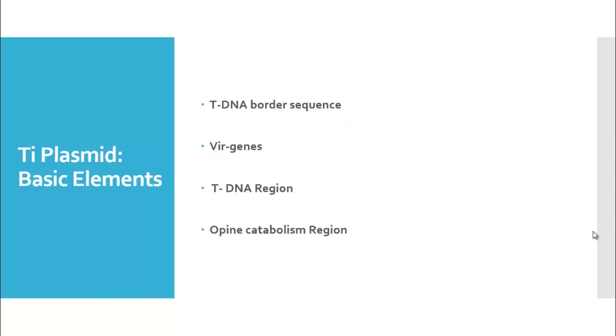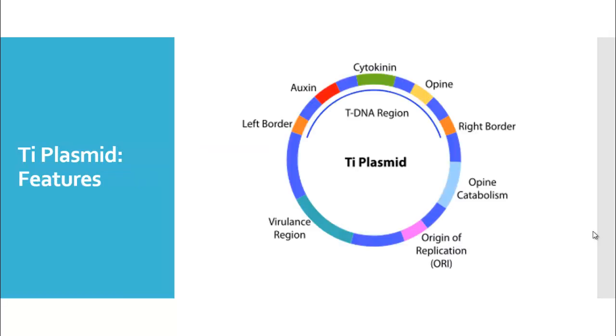These are the basic elements of the Ti plasmid. It has a T-DNA border sequence, a virulence region, a T-DNA region, and an opine catabolism region.